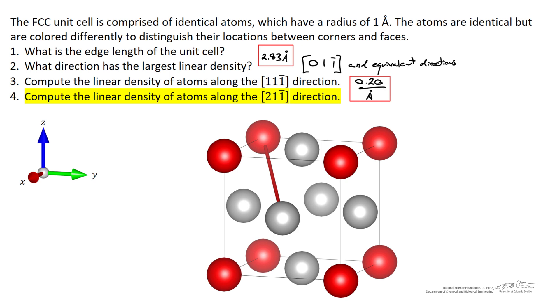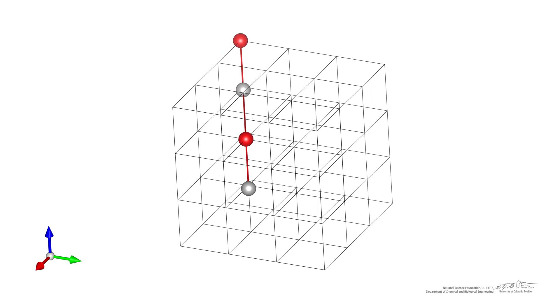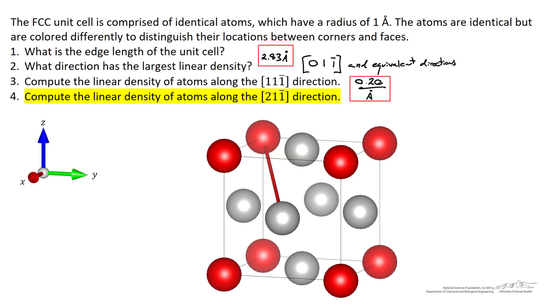And finally, we're being asked to calculate the linear density along the [2, 1, 1] direction, just shown here. If we look at a few more unit cells, we're trying to figure out the linear density of atoms along this line. So here the linear density, again, we only have one atom along the length of that line.